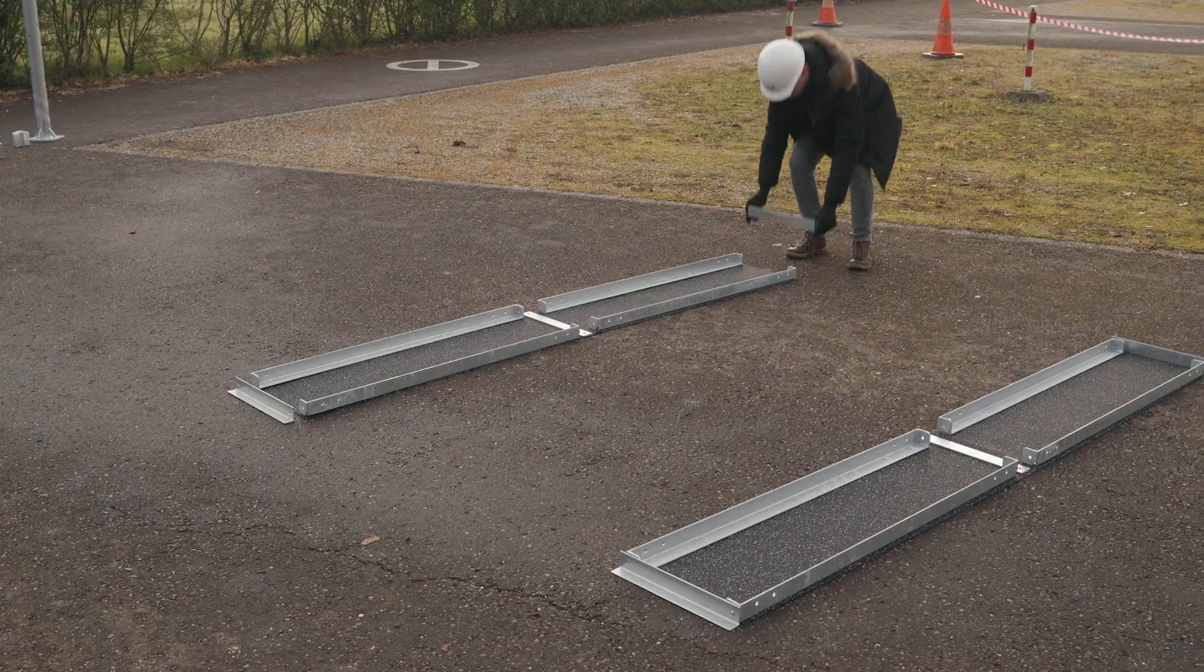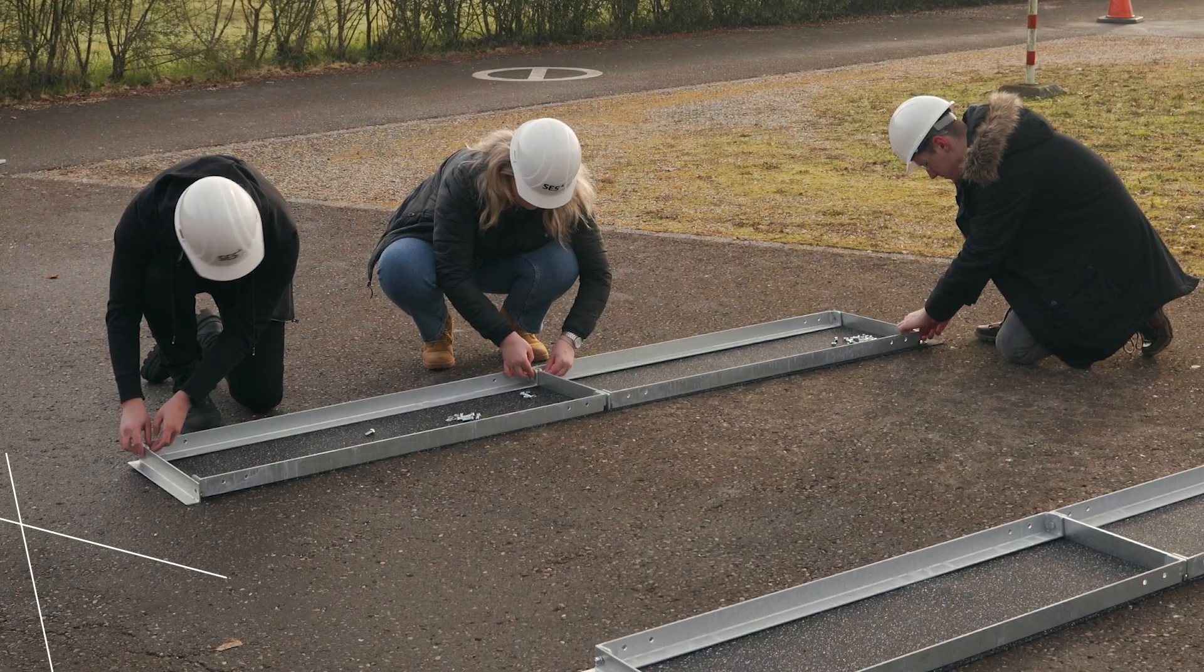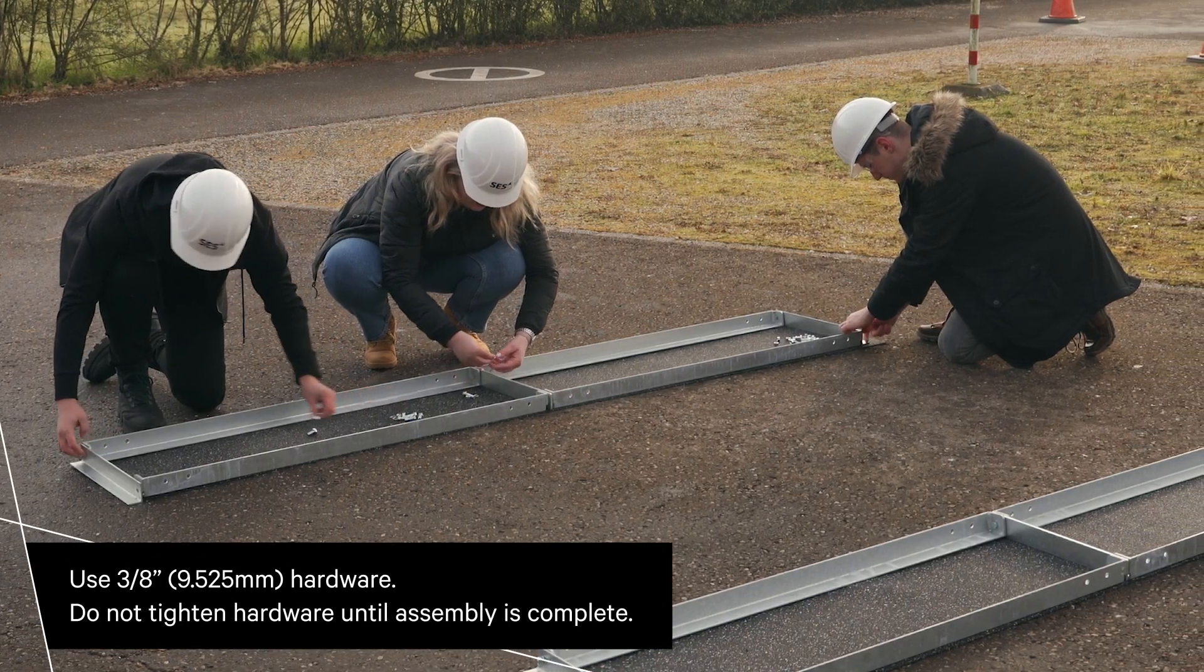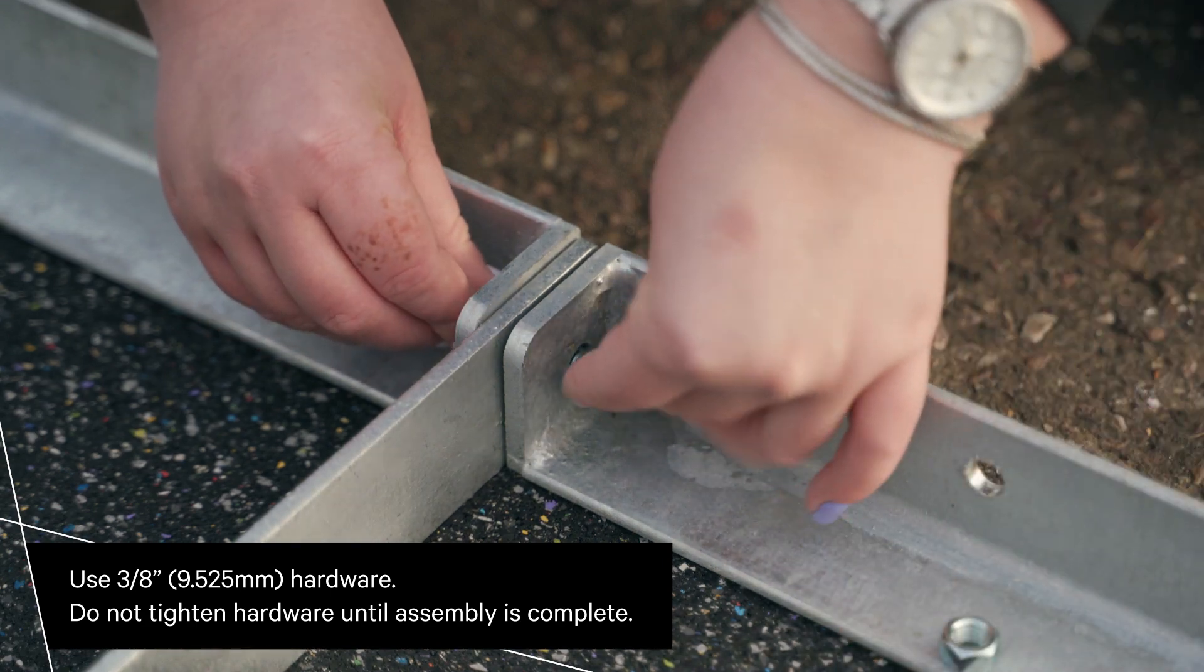Using the provided hardware, join the two ballast trays together. At this point, do not fully tighten the hardware.